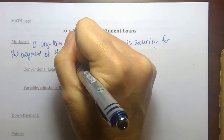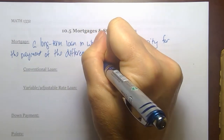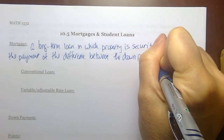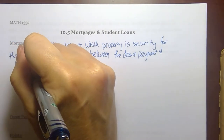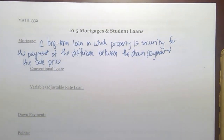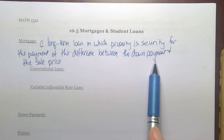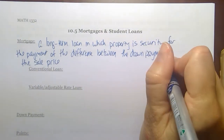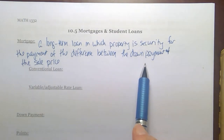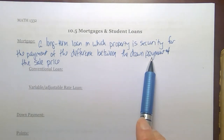The mortgage covers the payment of the difference between the down payment and the sale price. Just like with a car loan, the car is security for payment — if you don't pay your car payment, they come and take your car. With a mortgage, the house or land is the security for the payment. There is typically a down payment; if I'm paying money down, I'm not borrowing that money, so that amount is not part of the loan.